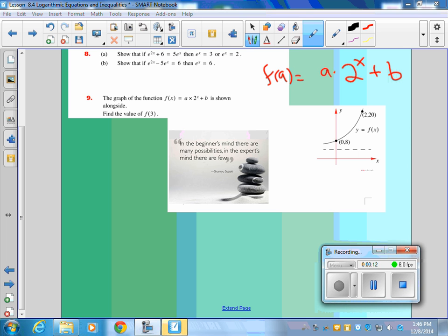So show me 2 to the x with your arms, everybody. 2 to the x, what point does it go through? 0, 1. Very good. And then it's going to go times a, which will make it stretch or shrink, and then plus b means it goes up.